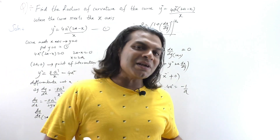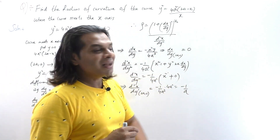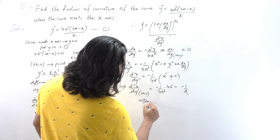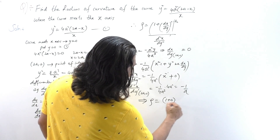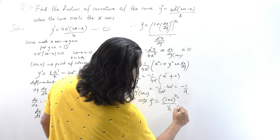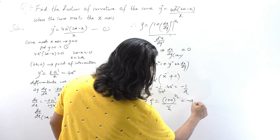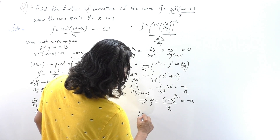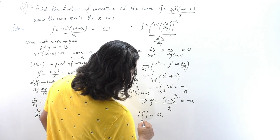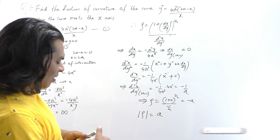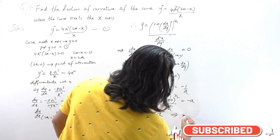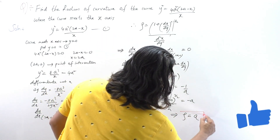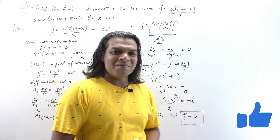We now have dx/dy = 0 and d²x/dy² = -1/a. Substituting into the formula: ρ = (1 + 0)^(3/2) / (-1/a) = 1/(-1/a) = -a. Since the radius of curvature is always positive, the radius of curvature is ρ = a. That is the answer.